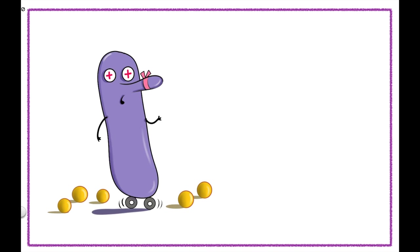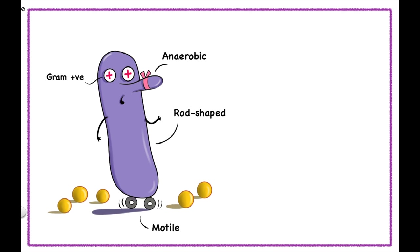Clostridium botulinum is a gram positive, rod shaped, motile, spore forming and anaerobic bacteria. This picture will help you to remember all these points. Here you can see this is rod shaped. The plus sign on its eye will help you to remember that it is gram positive. The clip on the nose signifies that it is anaerobic. The tire signifies it is motile and the spores on the ground will help you to remember that it is spore forming bacteria.